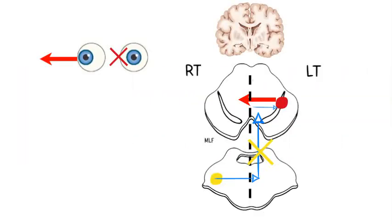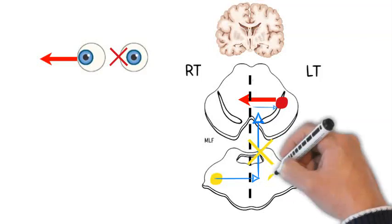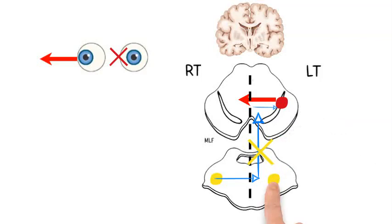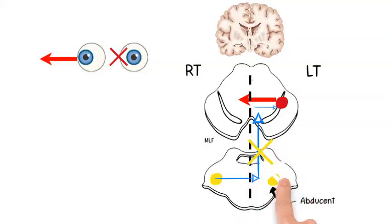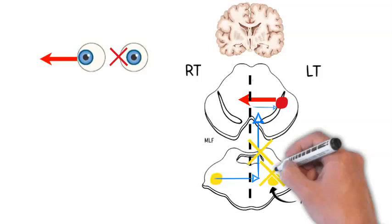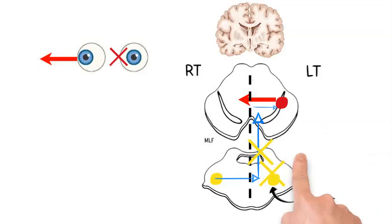Now let's go back to the same scenario but with a lesion of the left medial longitudinal fasciculus extending to involve the nearby left abducent nucleus or the paramedian pontine reticular formation.